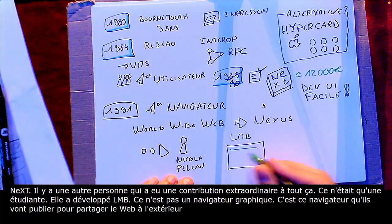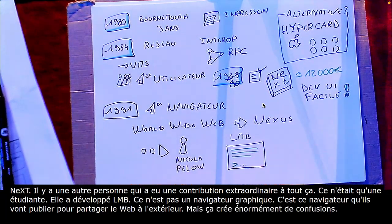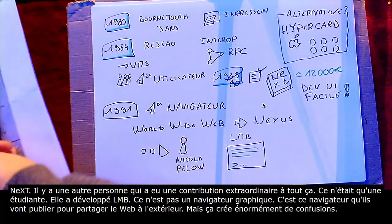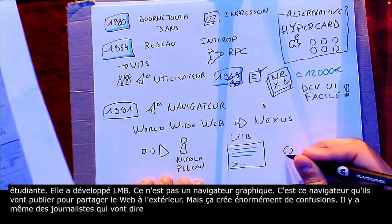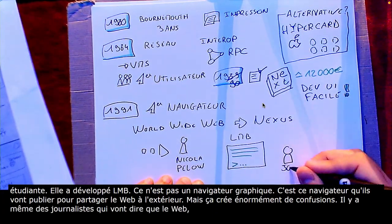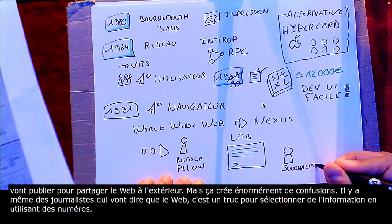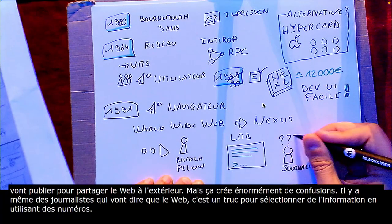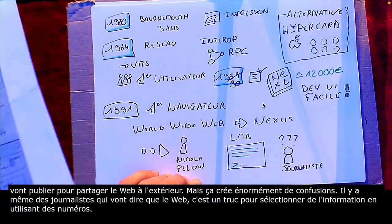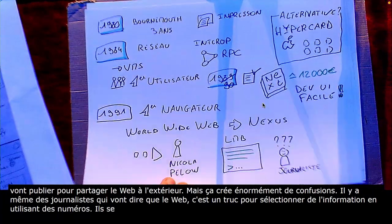Le problème, c'est que ça crée énormément de confusion. Il y a même des journalistes qui, à l'époque, vont dire que le web, c'est un truc pour sélectionner de l'information en utilisant des numéros. Parce que dans l'interface, vous avez un numéro pour aller sur les liens parce que c'est de la ligne de commande. Et donc, il se rend bien compte qu'il va falloir développer un navigateur pour les autres systèmes d'exploitation.